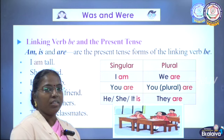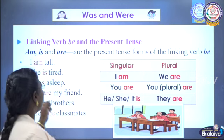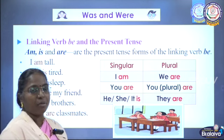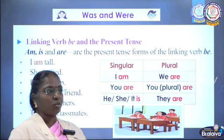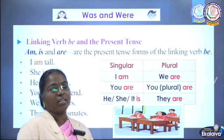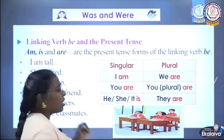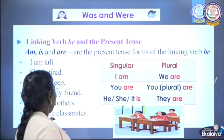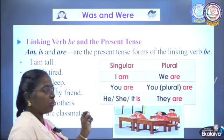For example: I am tall. The linking verbs we use are am, is, and are. For I, we use am. She is tired. He is asleep — because at present he is sleeping, so we say he is asleep. You are my friend. We are brothers. They are my classmates — since they is a plural pronoun, we use are. He, she, it — since it is singular, we use is.